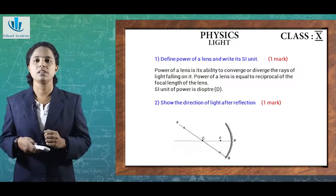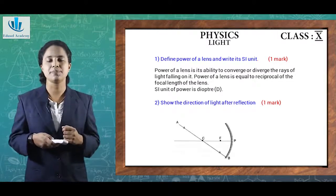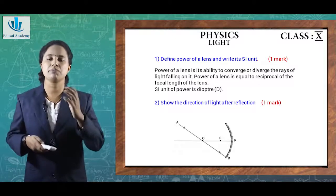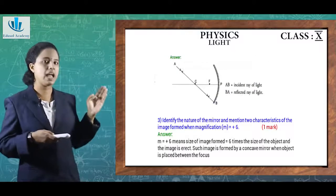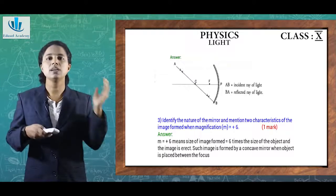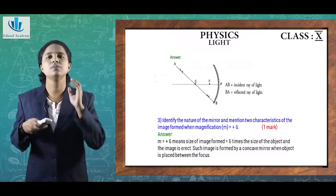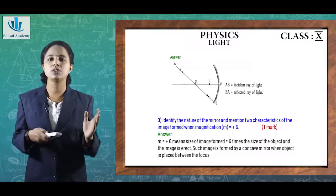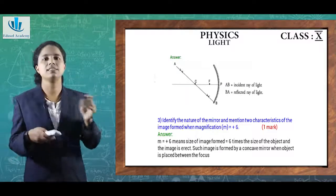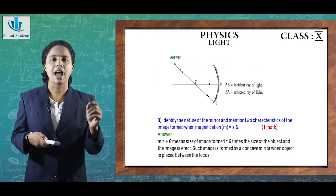Second question: show the direction of light after reflection. From the figure, AB marks the incident ray with arrows marked in the downward direction. The reflected ray will be along the same direction from B to A, because the incident ray is passing through the center of curvature, so after reflection it traces the same path but from B to A. The arrow for BA is marked in the opposite direction to AB.